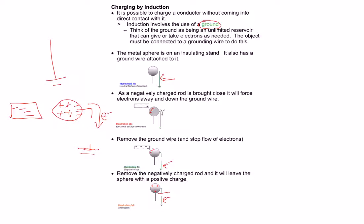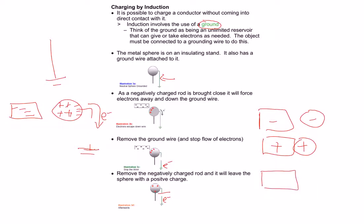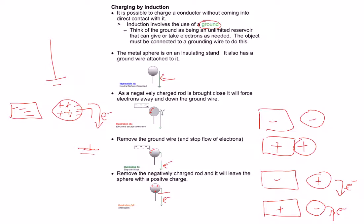Our sphere now has a lack of electrons, so it's positively charged. With conduction, a negative rod touching a neutral object leaves both negative; a positive rod leaves both positive. But with induction, it works the opposite way — bringing a negative rod close chases away electrons, and once we break the ground connection, the sphere is left positive. The reverse also works: a positive rod close to the grounded sphere pulls electrons up the wire, so when removed, the sphere is left with excess negative charge.